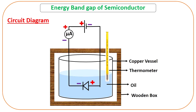The PN junction diode is immersed inside a copper vessel. Inside the copper vessel there is some oil, and you can see that there is a thermometer kept inside the oil along with the diode.